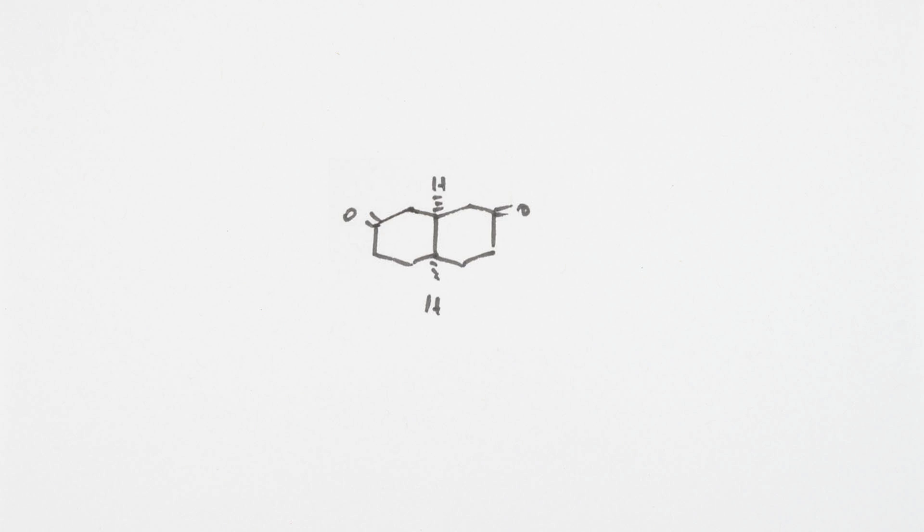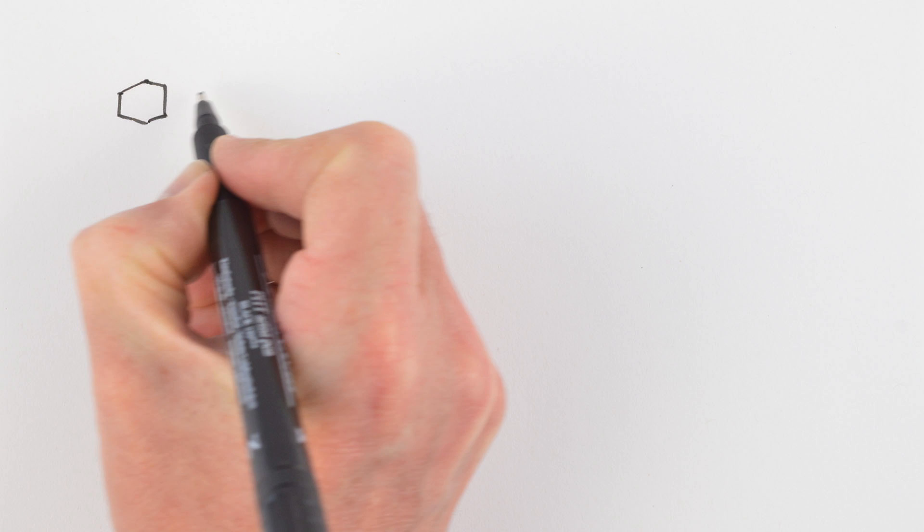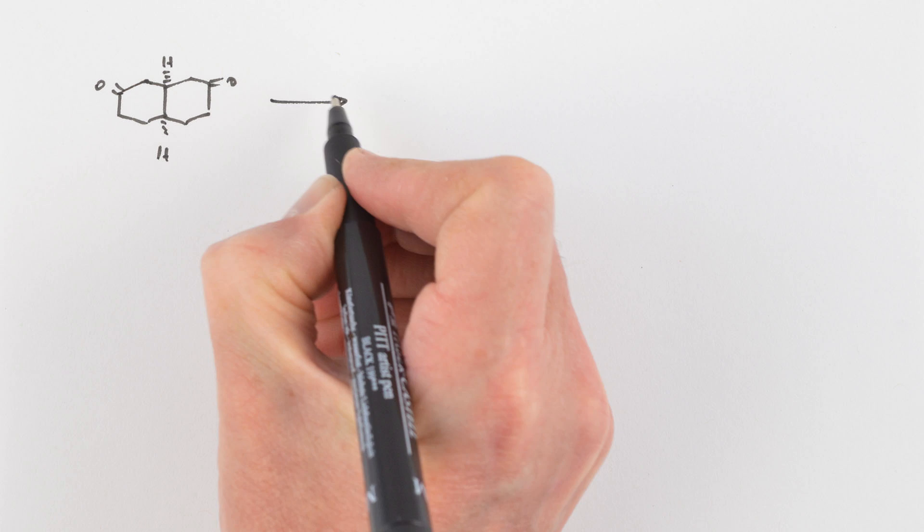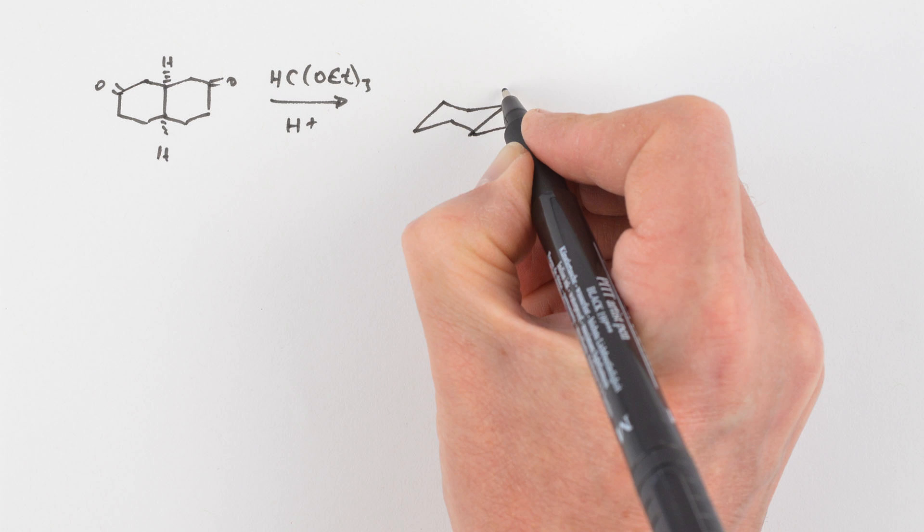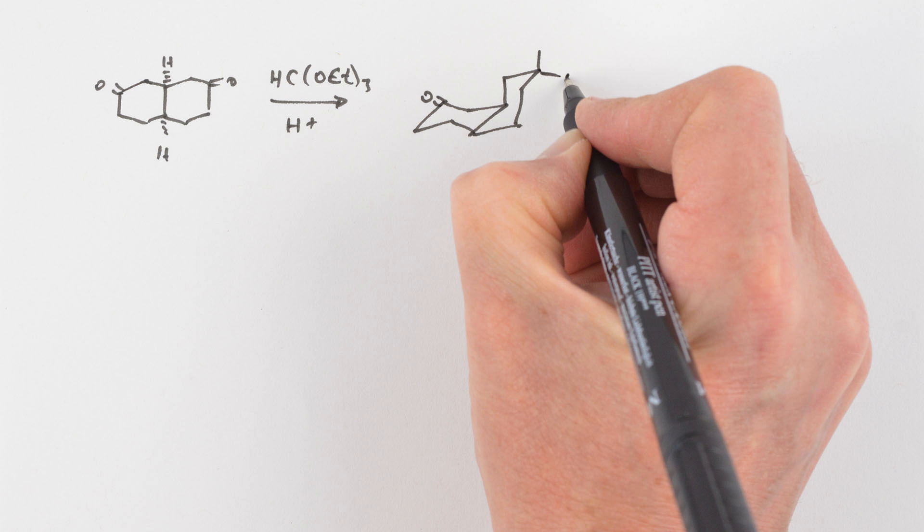This diketone is a symmetric molecule, and we want to reduce one of the ketones to an alcohol and convert that alcohol into a leaving group so that it can be displaced by the enolate from the remaining ketone. The diketone was treated with an equivalent of triethyl orthoformate and acid to yield the ketal ketone.